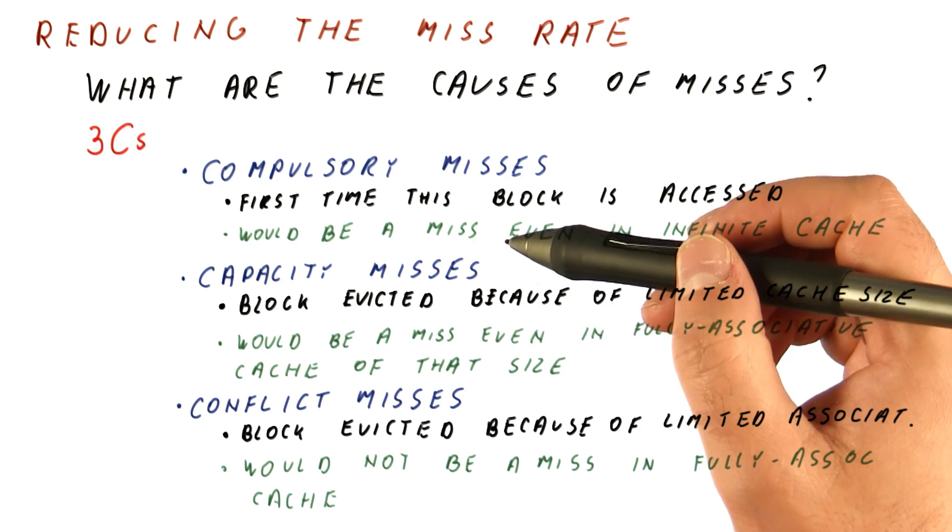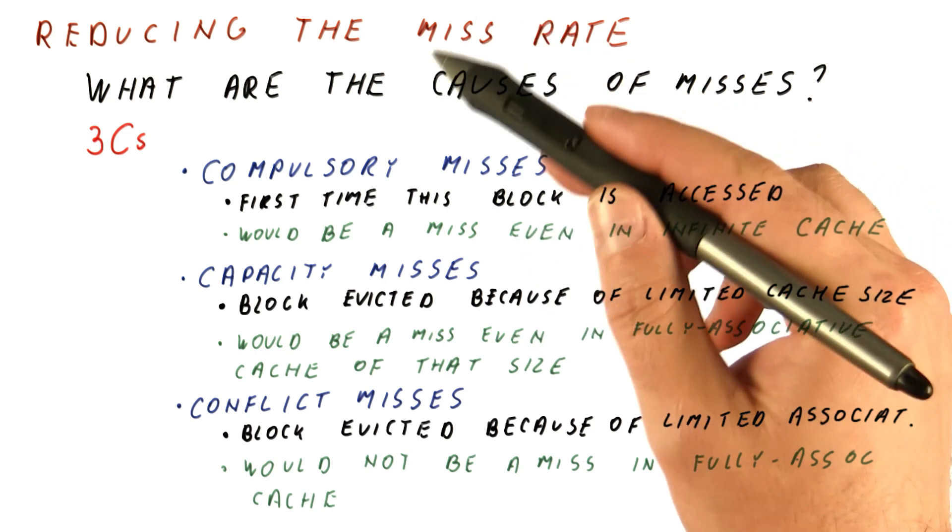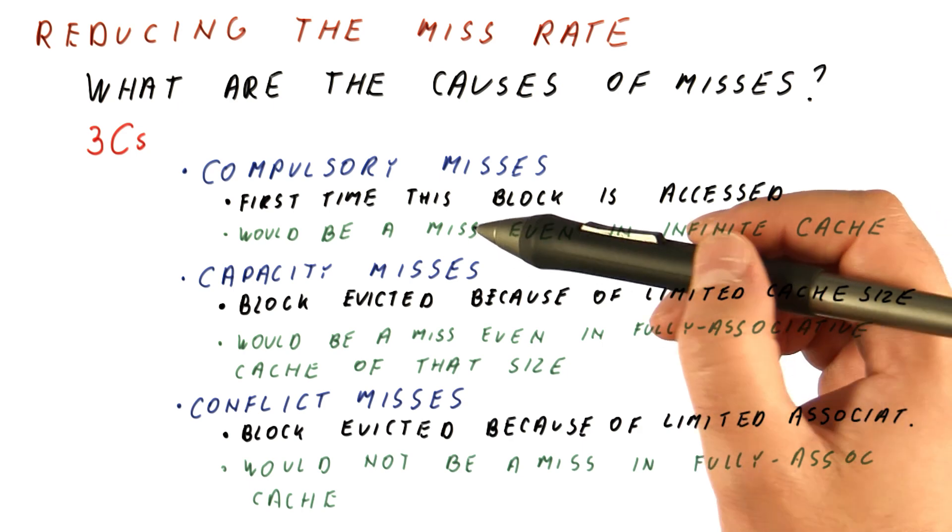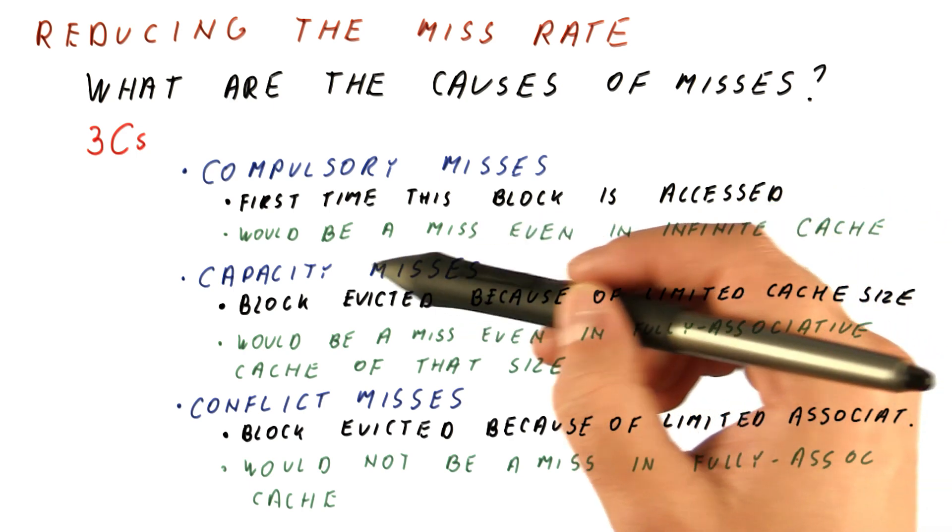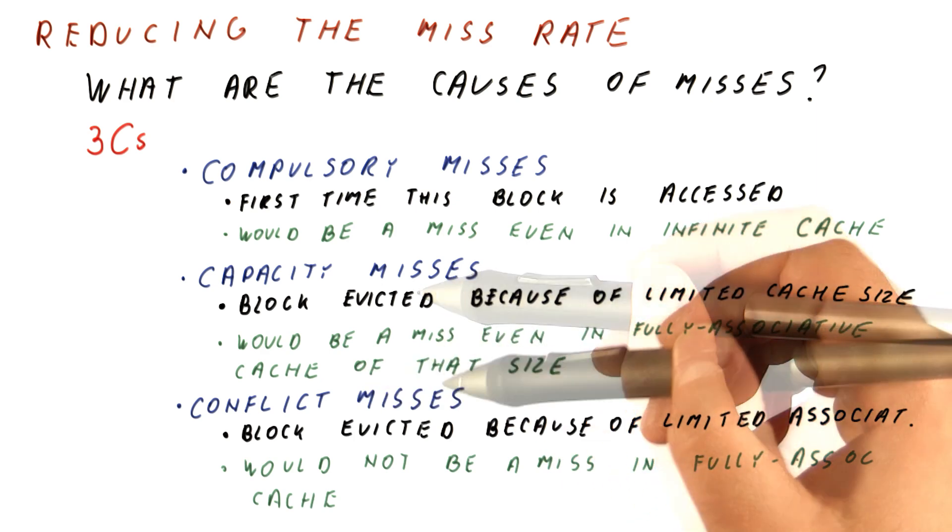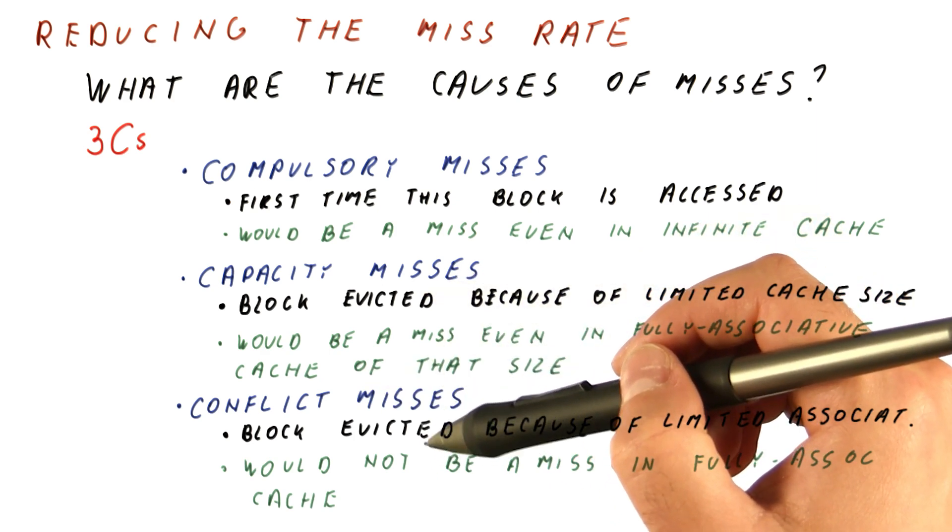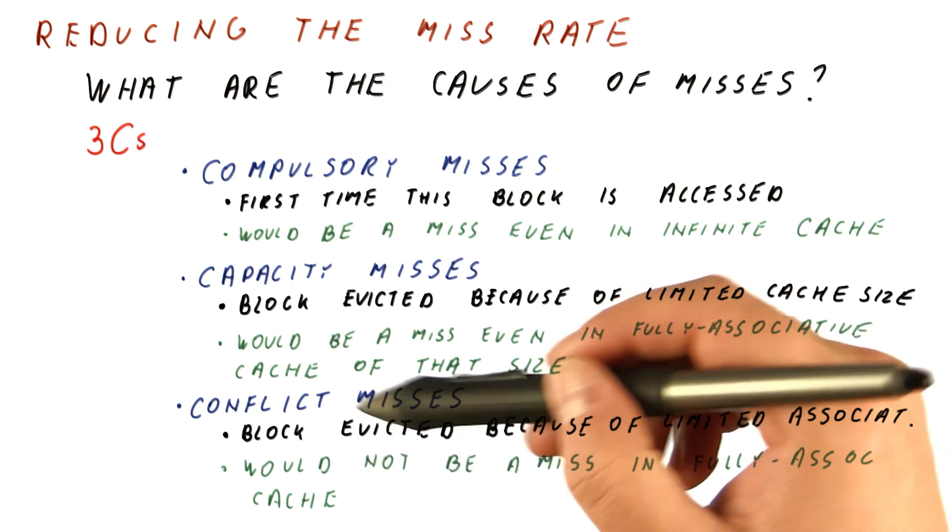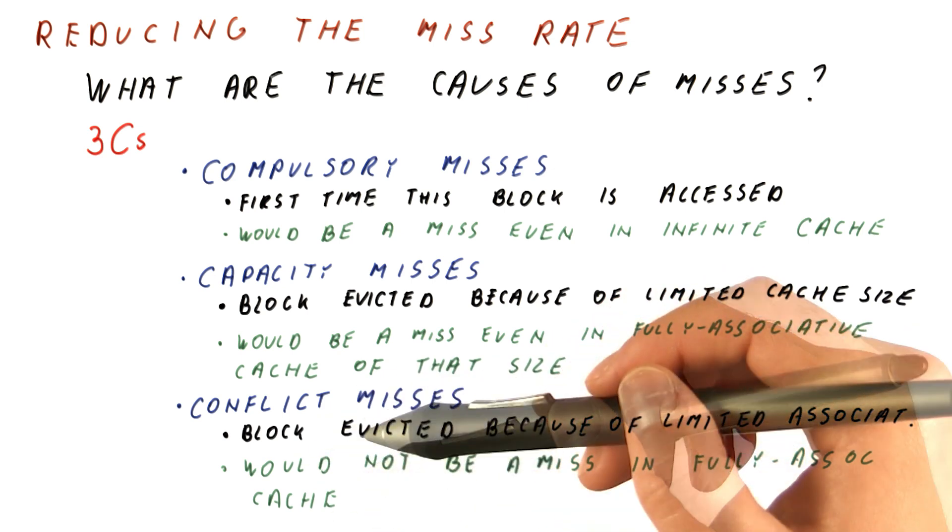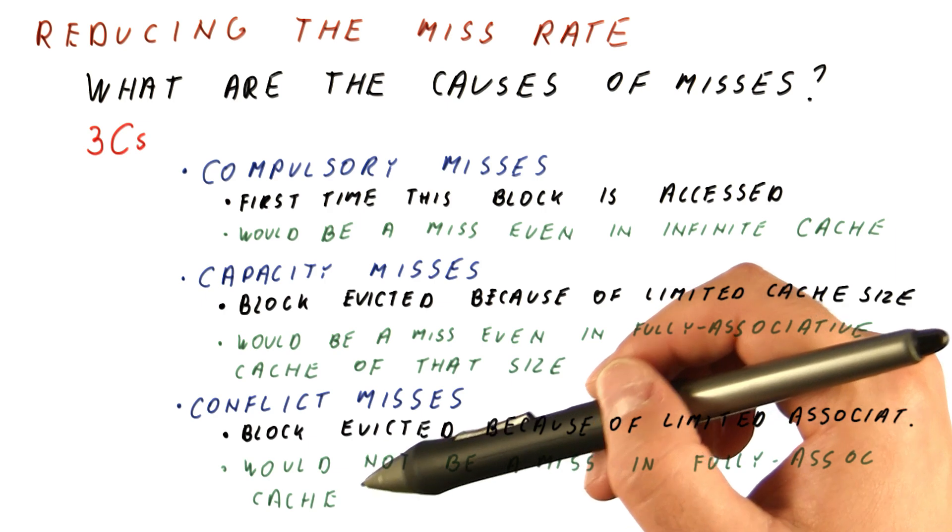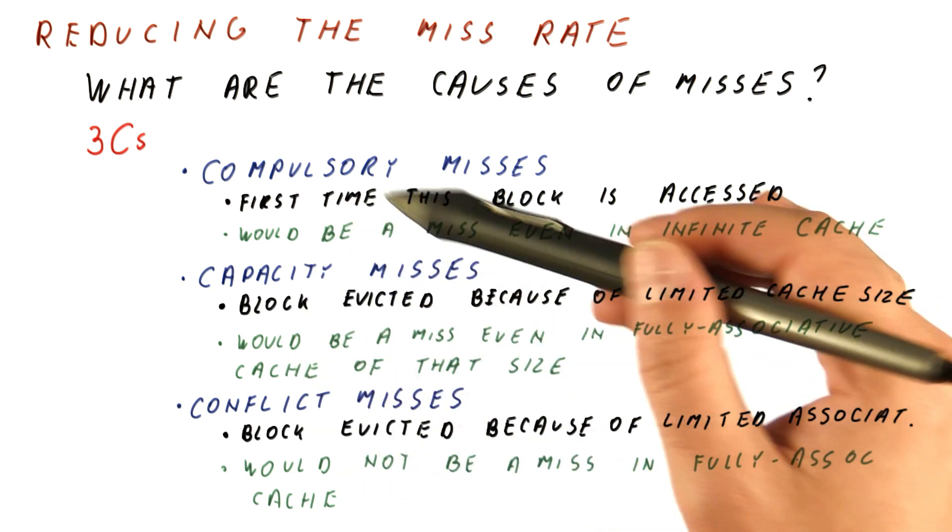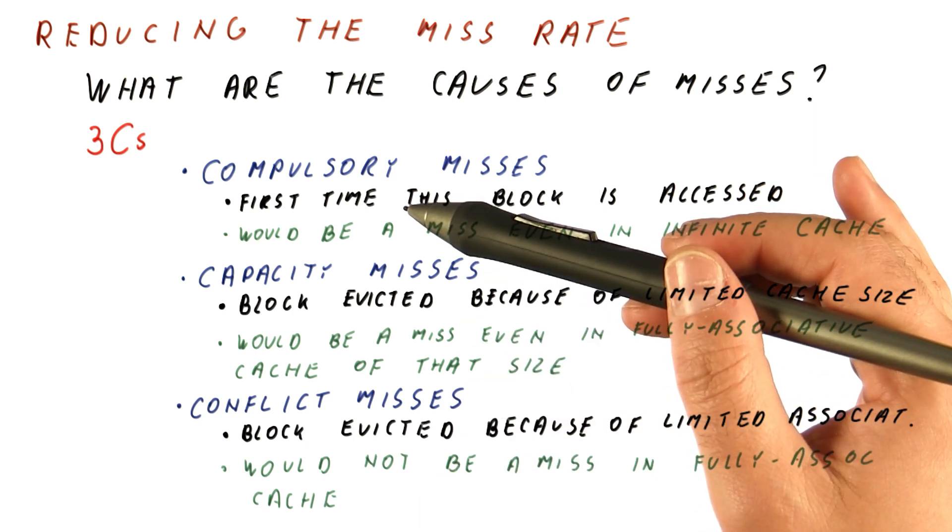Now some of the obvious techniques for reducing the miss rate will target some of these. For example, a larger cache would help us reduce the number of capacity misses. A larger associativity would help us reduce the conflict misses. A better replacement policy would also help us with conflict misses, but all of those techniques also affect the hit time. Now let's look at some techniques that are trying to reduce the miss rate without necessarily increasing the hit time in return.